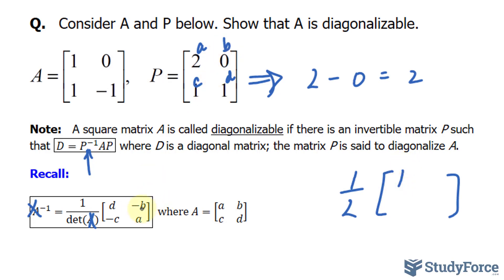Our B becomes negative zero, so it's simply zero. That becomes negative C, so negative one. And A is two.